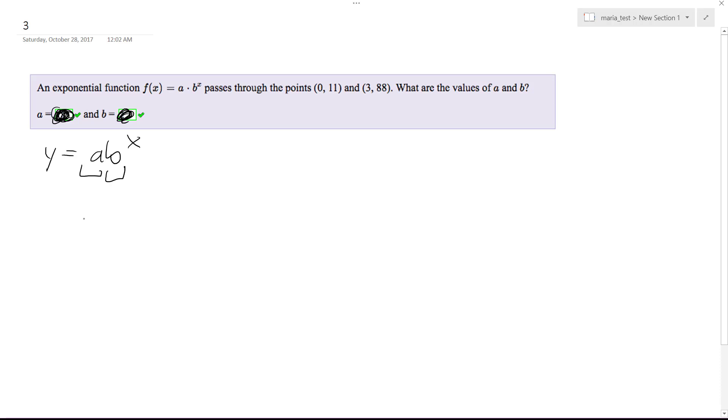So the first equation, so a, so if I plug in f of 0 for a times b to the x, I get out 11.